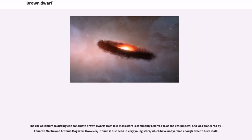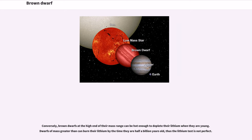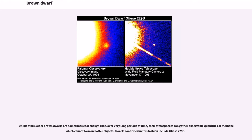The use of lithium to distinguish candidate brown dwarfs from low mass stars is commonly referred to as the lithium test, and was pioneered by Eduardo Martín and Antonio Magazzù. However, lithium is also seen in very young stars which have not yet had enough time to burn it all. Heavier stars like the sun can also retain lithium in their outer layers, which never get hot enough to fuse lithium. Those larger stars are easily distinguishable from brown dwarfs by their size and luminosity. Conversely, brown dwarfs at the high end of their mass range can be hot enough to deplete their lithium when they are young. Thus, the lithium test is not perfect. Unlike stars, older brown dwarfs are sometimes cool enough that over very long periods of time their atmospheres can gather observable quantities of methane.